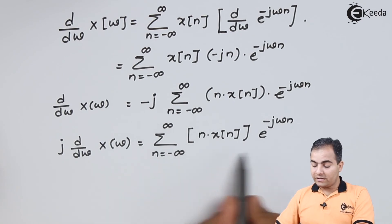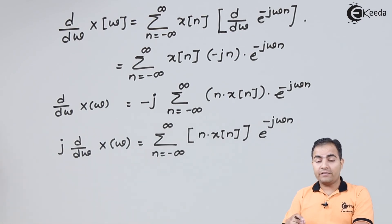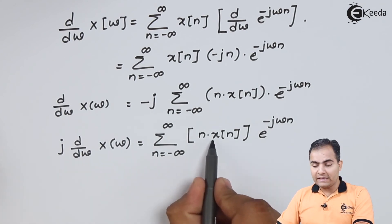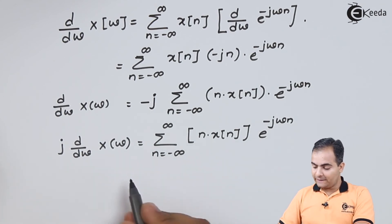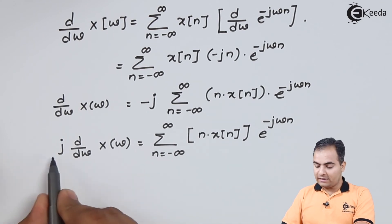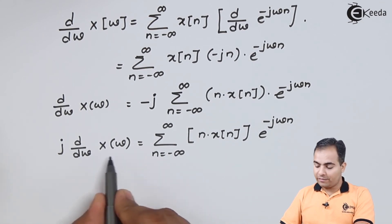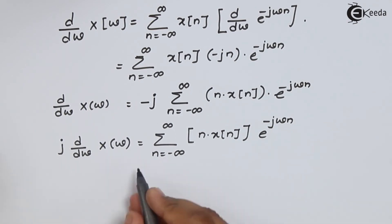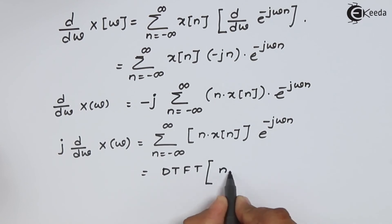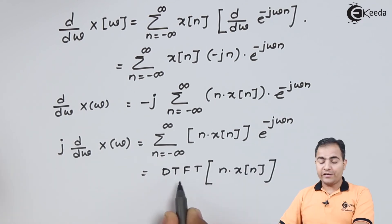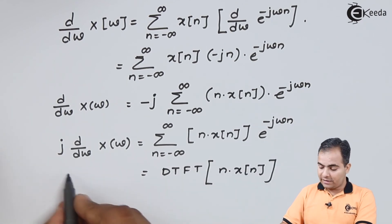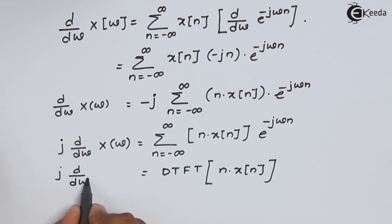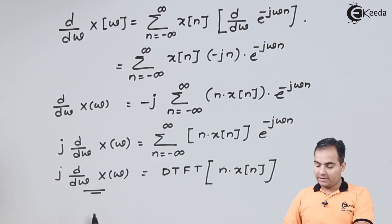This summation is nothing but the definition of the DTFT of a discrete sequence. If we consider the discrete sequence as n times x of n, then the result is j times d by d omega of X of omega. Therefore, the DTFT of n times x of n equals j d by d omega of X of omega, completing the proof of the differentiation property.